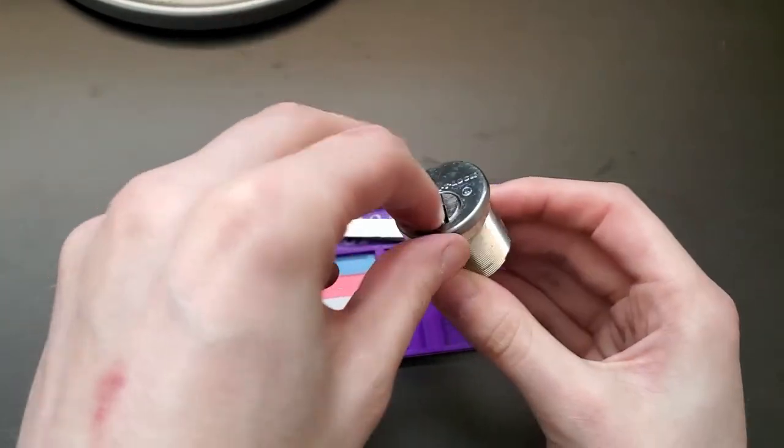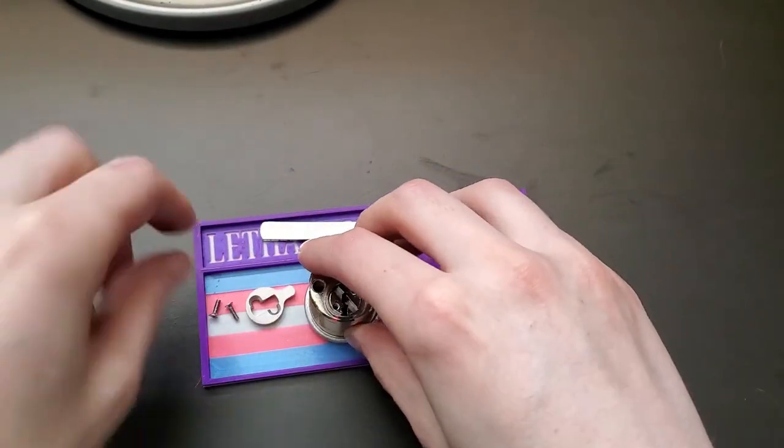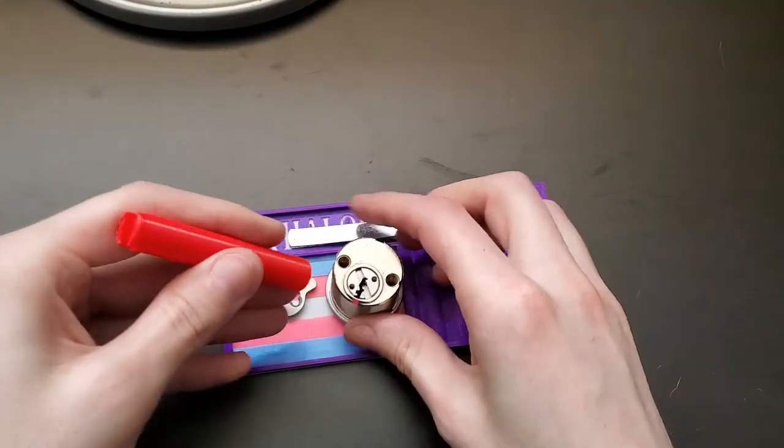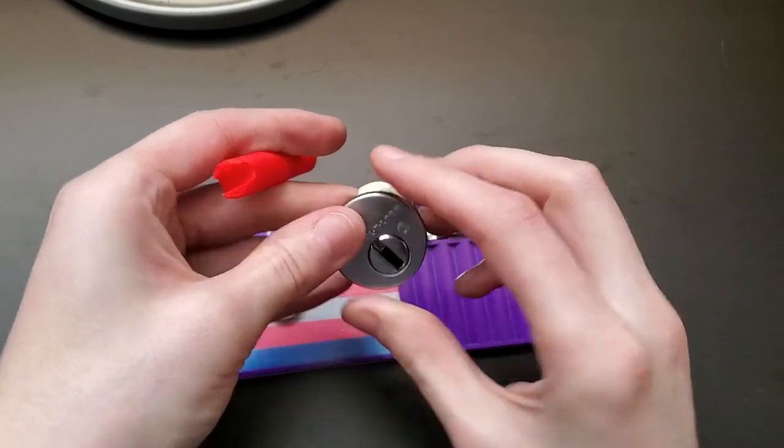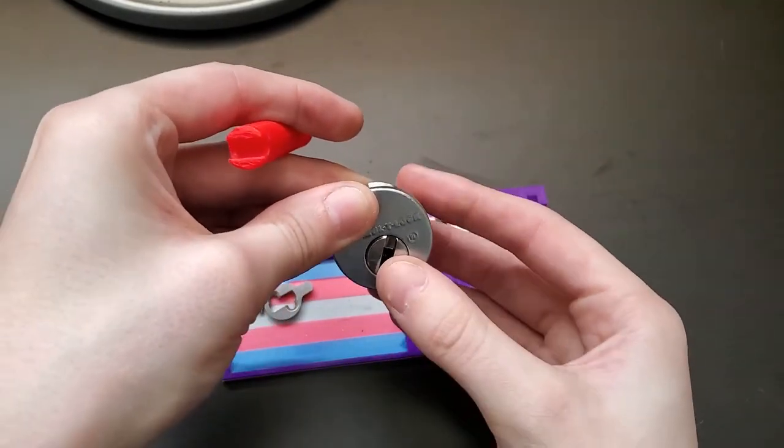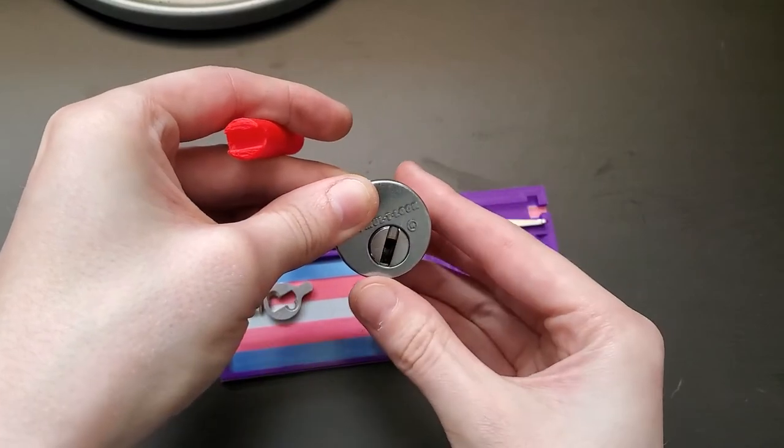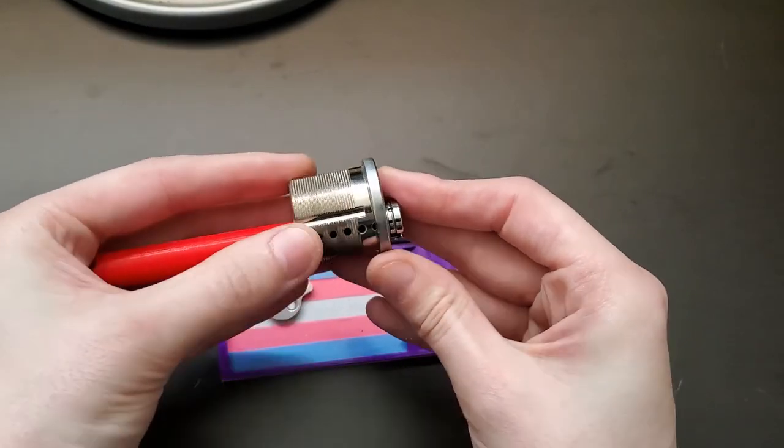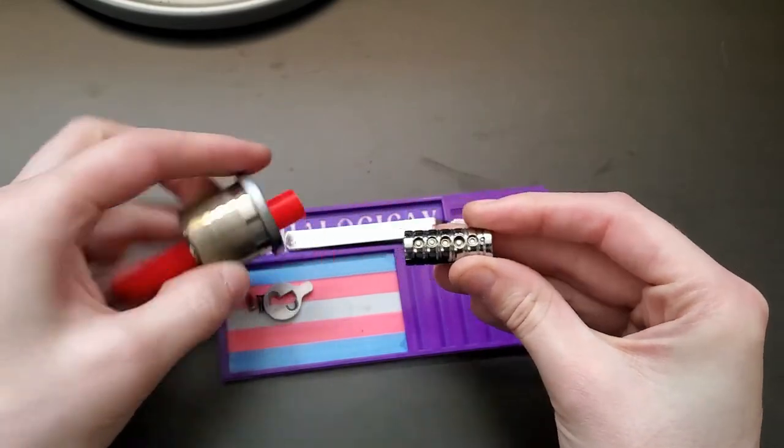So I actually do not have a key for this so we have to leave it in the picked state. I think that's my follower so we turn this to 45 degrees and make sure our key pins aren't gonna fall out. Excellent.